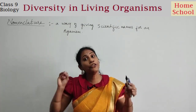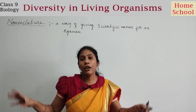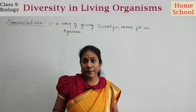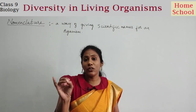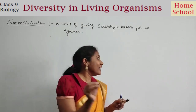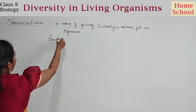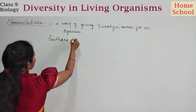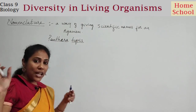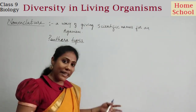If you know the scientific name of a particular organism, in every part of the world they can understand that name with respect to that particular organism. The scientific name of tiger is Panthera tigris. Wherever you go in the world, if you say Panthera tigris, it means tiger.